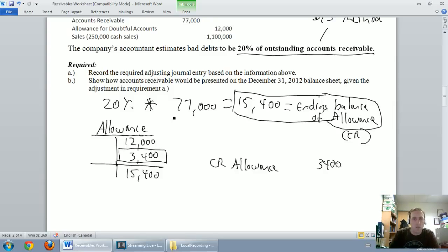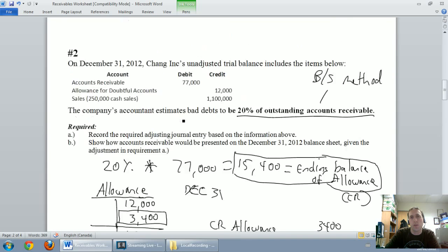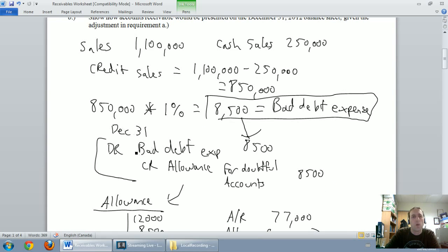So on December 31st, I'm going to credit my allowance for $3,400. Now, what's the related debit here? Well, let's go back up and look at what we did when we did the income statement method. We went debit bad debt expense, credit allowance for doubtful accounts. Same thing here.